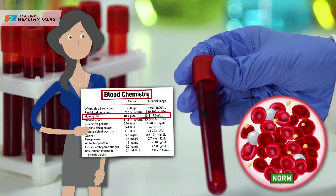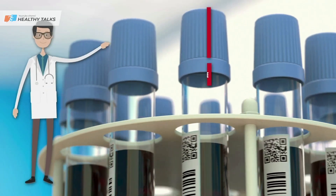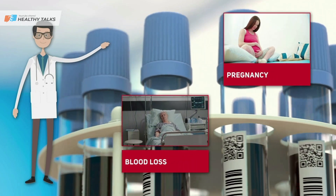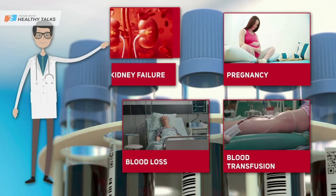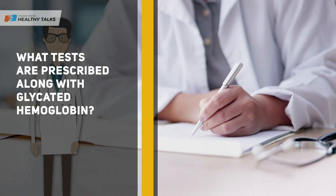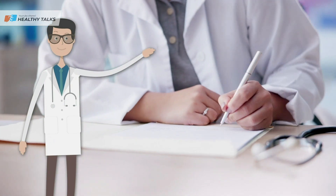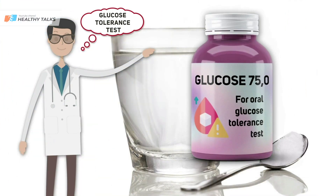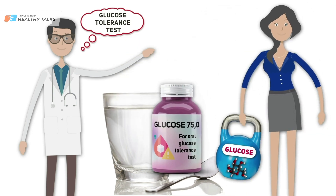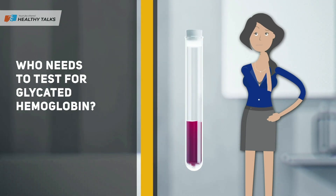The test can give a false result if your hemoglobin level is low, so you should make sure you are not anemic beforehand. Pregnancy, recent blood loss, blood transfusions, and kidney failure can also skew results. Your endocrinologist may prescribe additional tests to give you a detailed picture. Most often, doctors are interested in the results of the glucose tolerance test, which evaluates the body's response to glucose load.